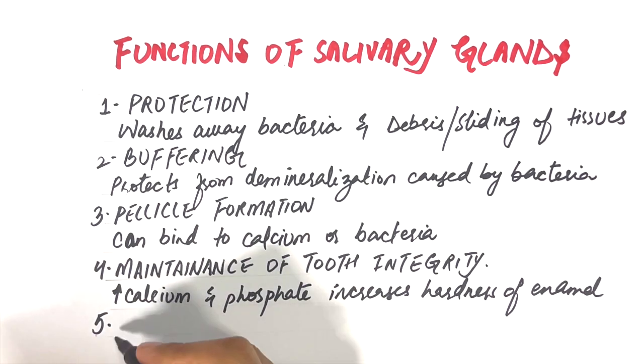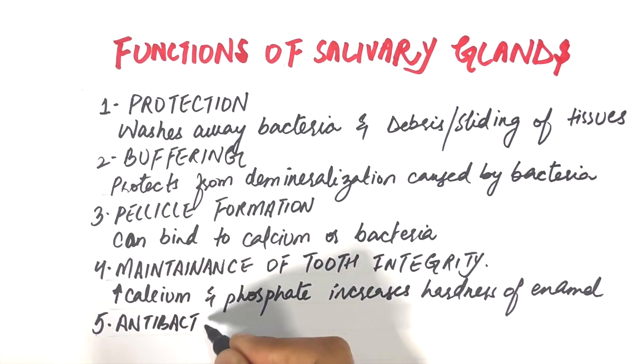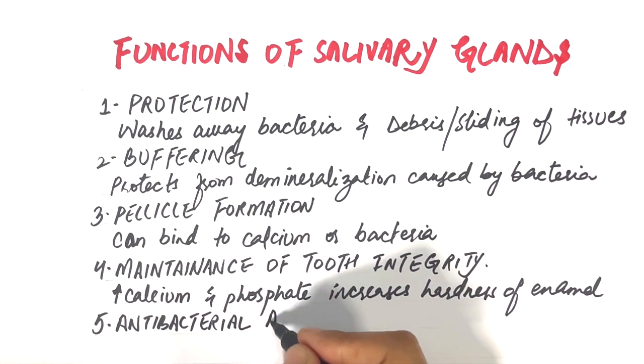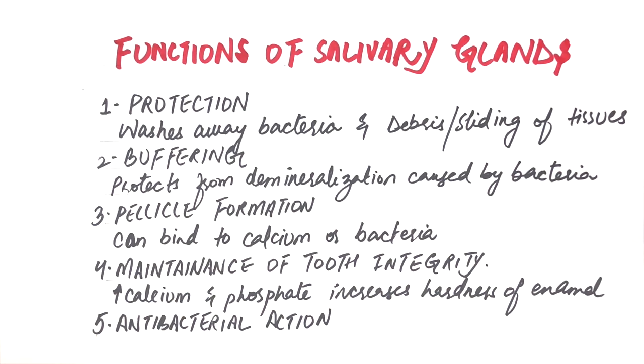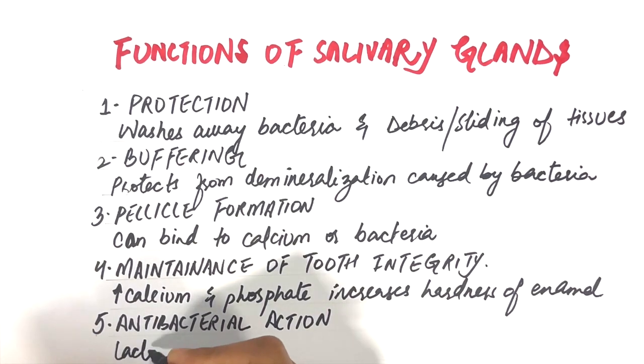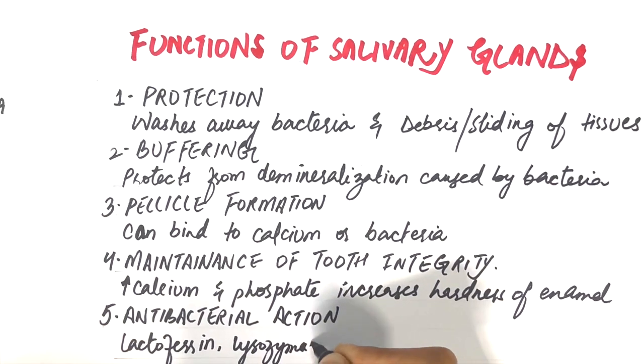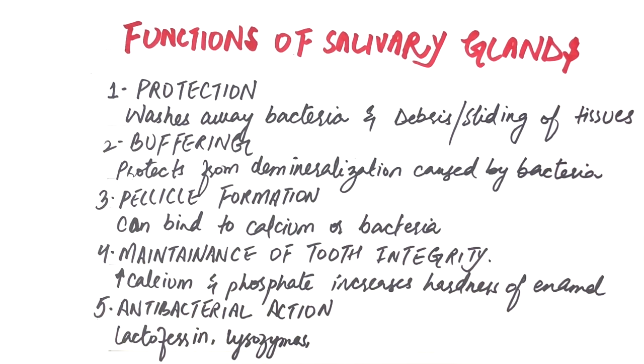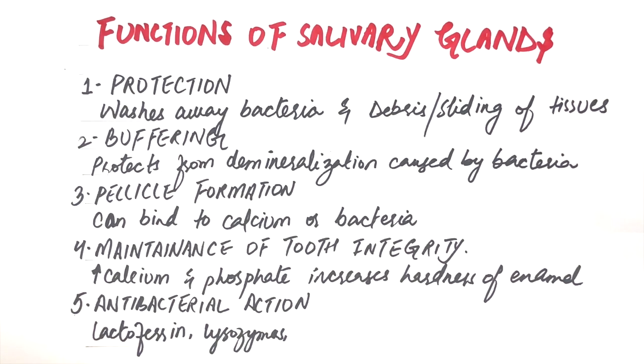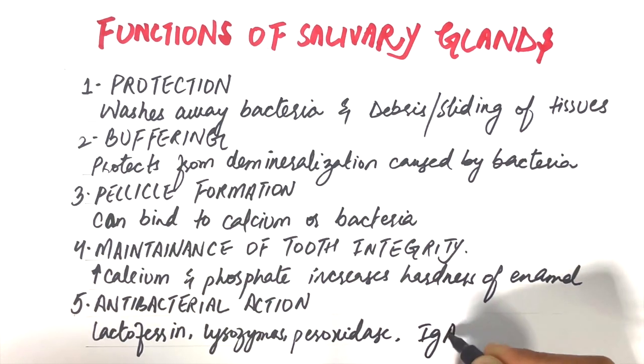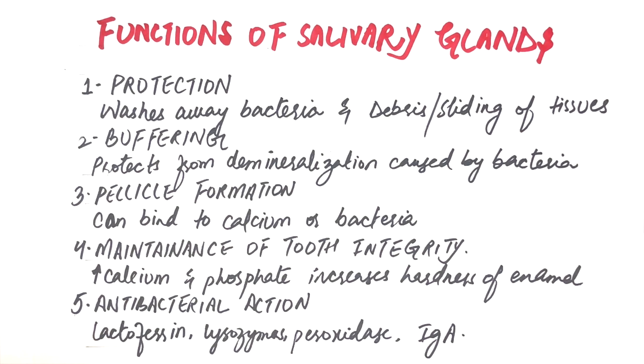Saliva contains mucins and a variety of proteins with antimicrobial actions. Salivary proteins are lysozymes, lactoferrin, peroxidase, and many more. IgA, which is a major salivary immunoglobulin or antibody, is also secreted in the saliva. This antibody causes agglutination of specific microorganisms, preventing their adherence to oral tissues.